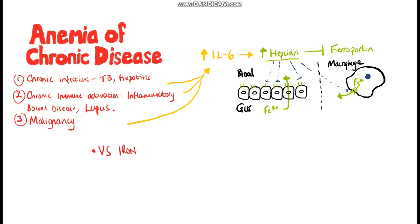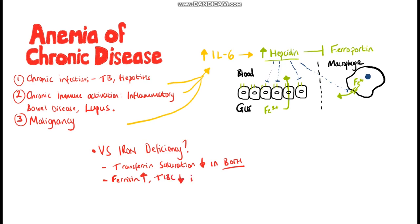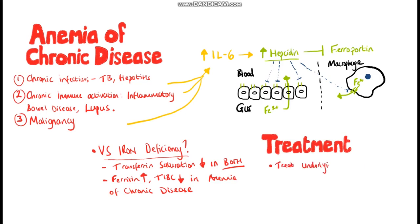So how can we distinguish between iron deficiency anemia and anemia of chronic disease? In both cases, transferrin saturation is low, typically below 20%. To distinguish them: ferritin levels will be elevated in anemia of chronic disease and inflammation with a normal to low total iron binding capacity, compared to low ferritin and high total iron binding capacity in iron deficiency anemia. Treatment of anemia of chronic disease involves removing the underlying cause in most cases.